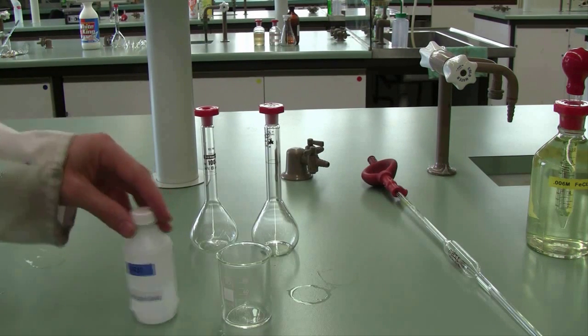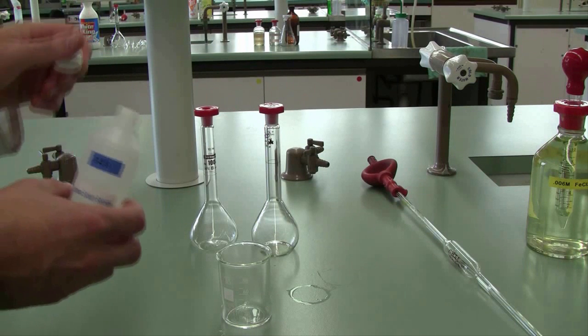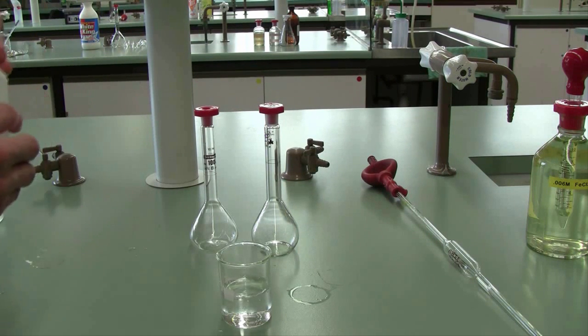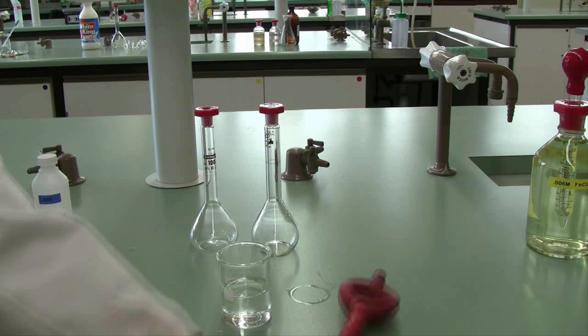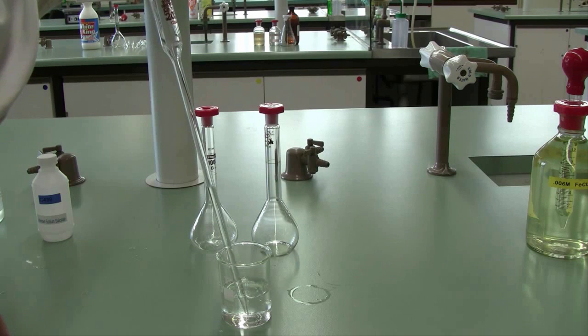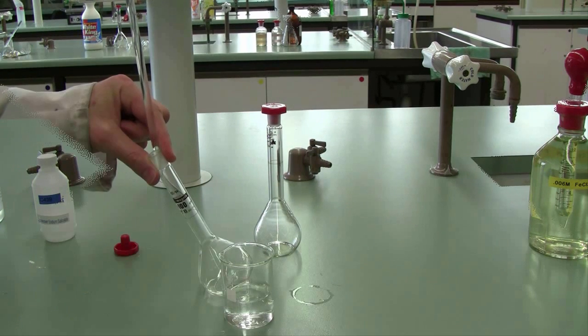Take your unknown solution and pour it into a clean dry beaker, collecting a 20 mL aliquot using your pipette and delivering it into a 100 mL standard flask. You'll complete this procedure twice so you have two identical replicates of your unknown sample. This gives you a means of testing your precision for this experiment.